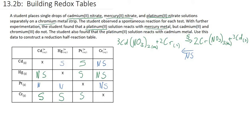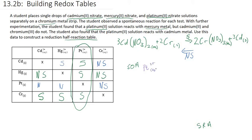We were asked to construct a reduction half-reaction table. A redox half-reaction table should start with the strongest oxidizing agent on the top left and end with the strongest reducing agent on the bottom right. The strongest oxidizing agent is the thing most likely to itself be reduced — reduction is a gain of electrons. The platinum ion reacts with every single metal possible, so it's going to be the strongest oxidizing agent. That reaction is: Pt²⁺ plus two electrons forms platinum metal.